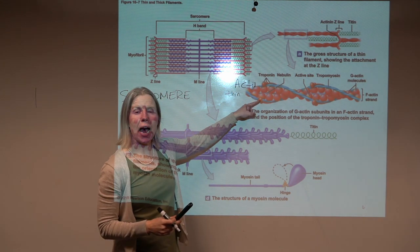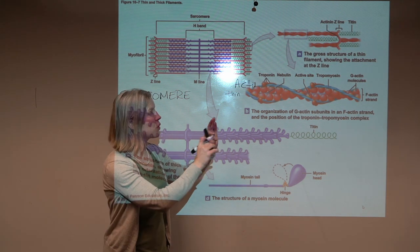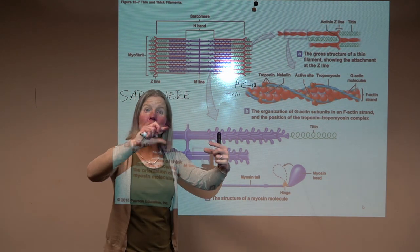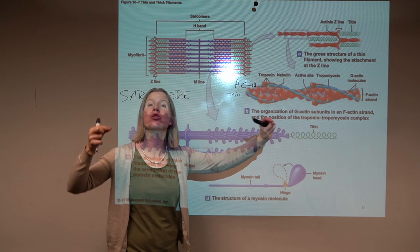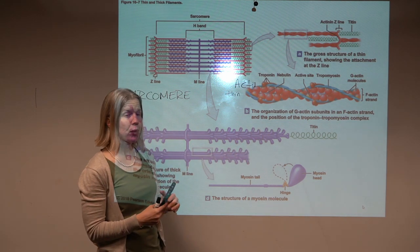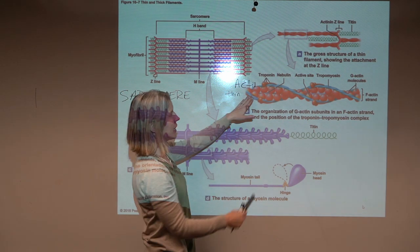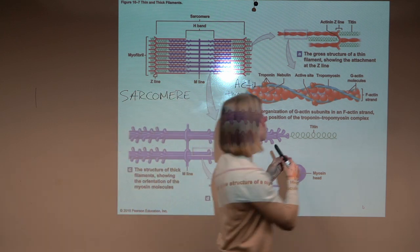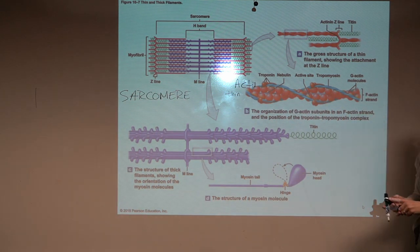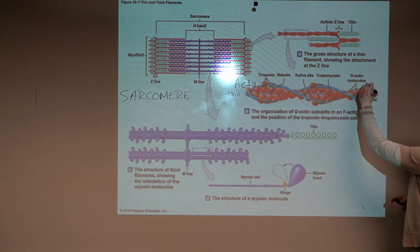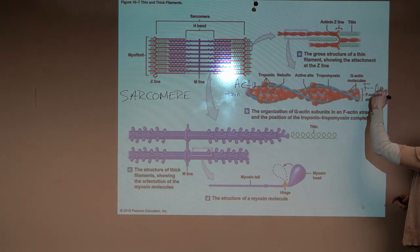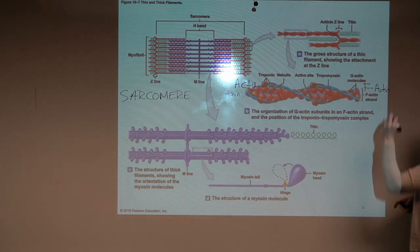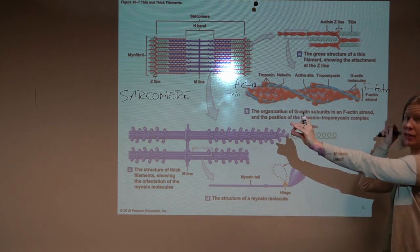Now, if you look at actin, what you'll see is what looks like maybe two strands of pearls kind of twisted together. The entire actin, then, when it's in its filamentous form, is called F-actin. F stands for filamentous. It's like a necklace.